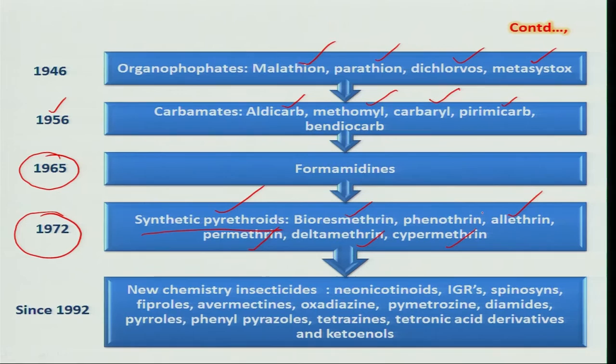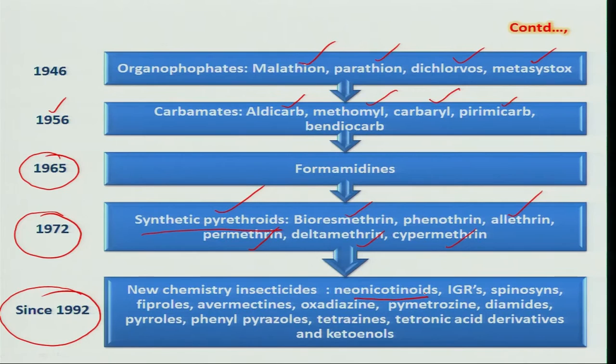From 1992 onwards there was a major development in the synthesis of newer insecticides belonging to altogether newer chemistry classes. Some of the newer insecticides include neonicotinoids, insect growth regulators, spinosyns, fipronil, avermectins having major activity on biting and chewing insects, oxadiazines, pymetrozine, diamides, phenyl pyrazoles, tetrazines, and ketoenols — these are some of the insecticides belonging to newer classes of pesticides.